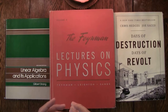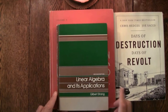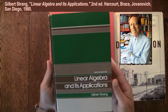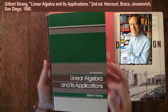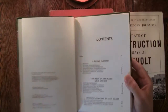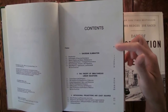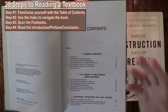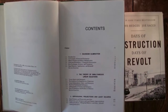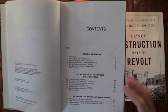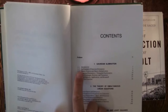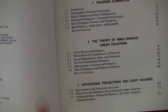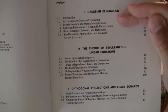We're going to skim through these books to show you the best way to read certain textbooks. The first is a linear algebra book — Linear Algebra and Its Applications, second edition. Let's look at the table of contents. There's a preface, which I usually read because it gives you an idea of what the authors were trying to do — it gets you in the mindset of the book. Each chapter is broken down into subcategories, starting with basic concepts and moving to more complicated ones.